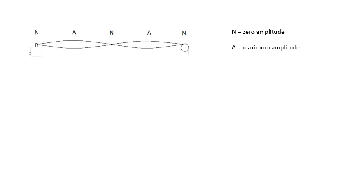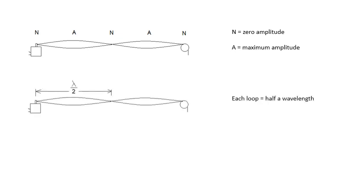Where the string is vibrating loads and loads and loads, that's called an antinode. So maximum amplitude is an antinode. Where the string isn't vibrating at all, zero amplitude, that's called a node. N-O-D-E. So you've got nodes and antinodes. So for a single loop, you've got an antinode in the middle and a node at either end.